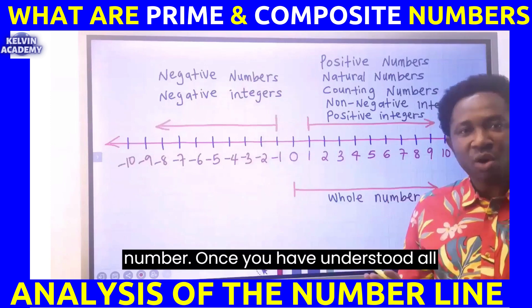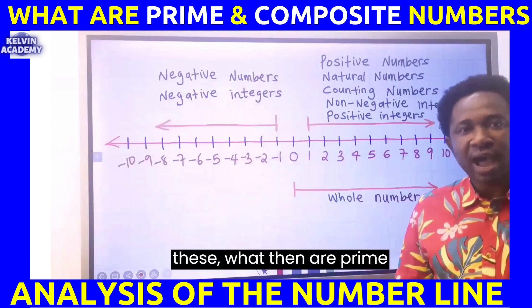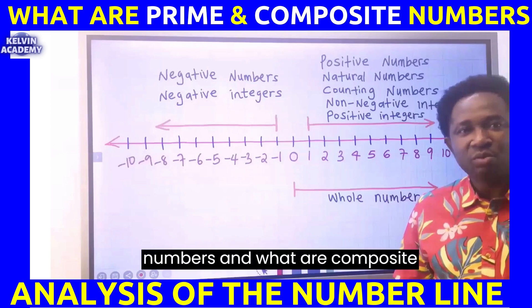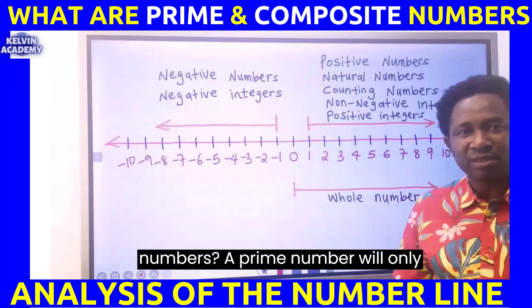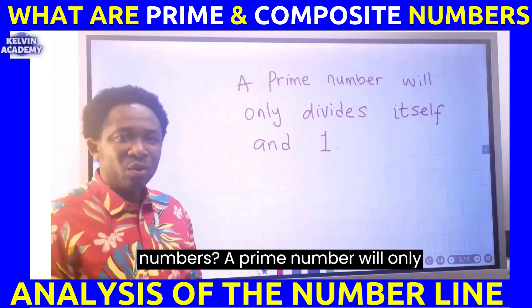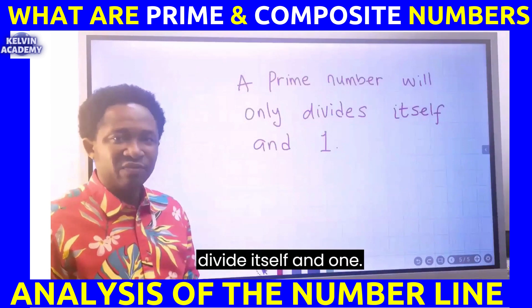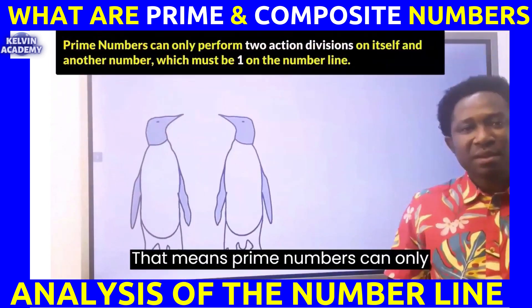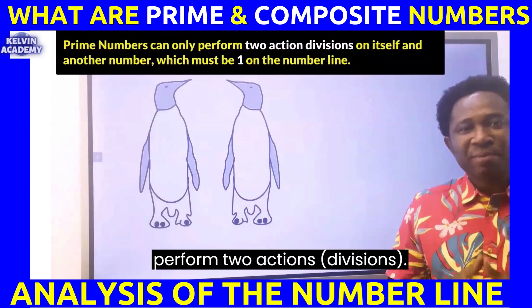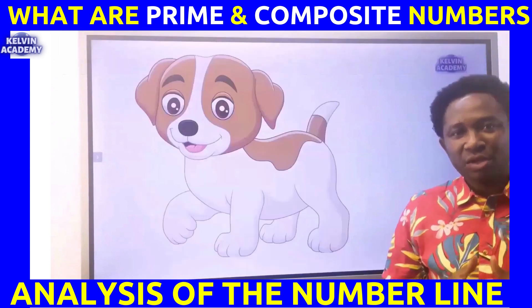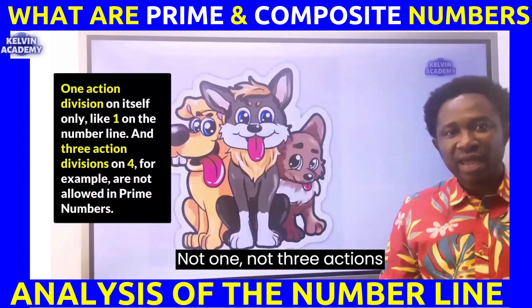Once you have understood all this, what then are prime numbers and what are composite numbers? A prime number will only divide itself and one. That means prime numbers can only perform two actions, not one, not three actions or more.